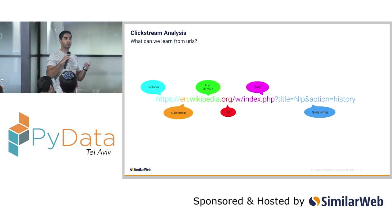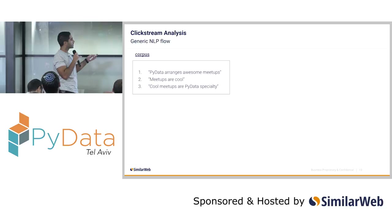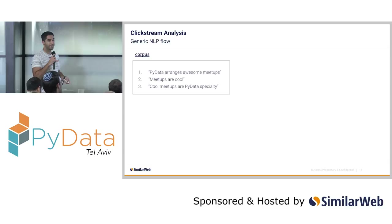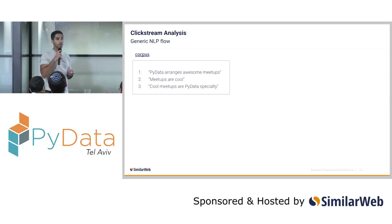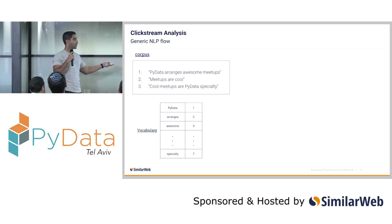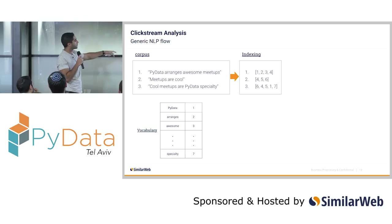I'll do a quick review of the generic NLP flow, which I'm sure you all know. Usually we have our corpus — here it's three sentences: 'PyData arranges awesome meetups,' 'meetups are cool,' and 'cool meetups are PyData specialty.' In our case, it's going to be millions of URLs that we need to build the corpus from. The next stage is building the vocabulary: a simple mapping between each unique word from the corpus and an index. Then the auxiliary step: map each sentence to the set of indices that compose it. PyData maps to ID number one, meetups to number four, and so on.